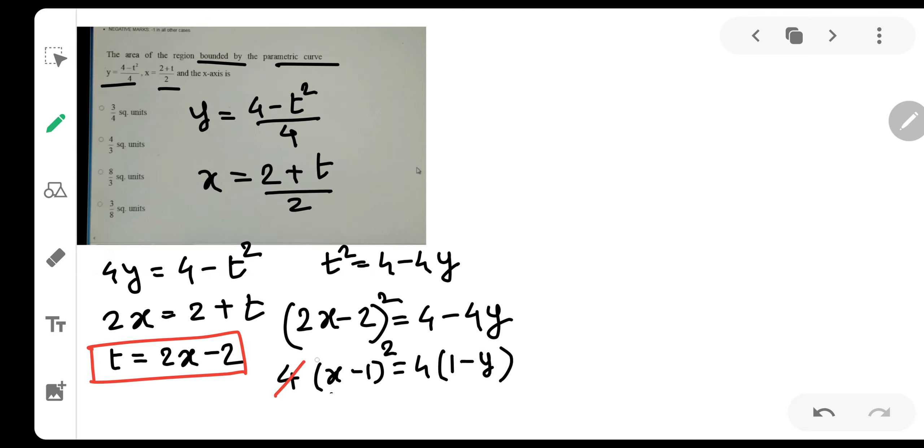I will use a red pen for the cancellations. So x minus 1 the whole square is coming out to be equal to, let me take minus common, so it will be y minus 1. Now you will say why did you take minus common? So that's the standard procedure. x minus 1 the whole square equal to minus y minus 1.